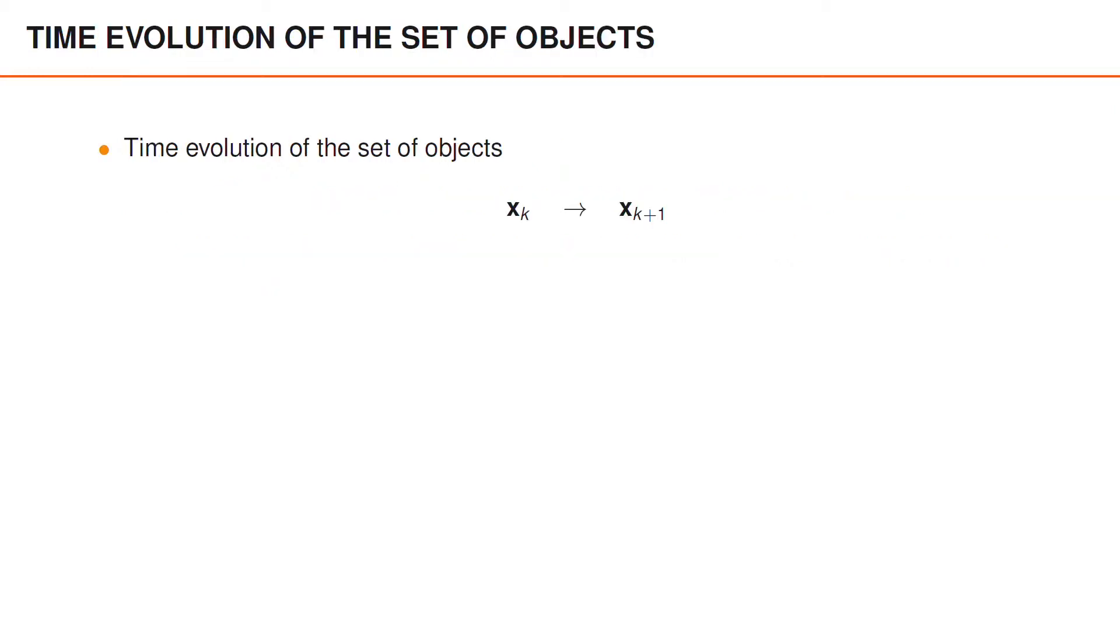If we look at the set of objects, the birth and death is related to the time evolution of the set of objects. How the set of objects changes from some set at time k to some set at time k plus 1. The set of objects at time k plus 1 can be said to be the union of so-called surviving objects and newborn objects, denoted xs and xb.